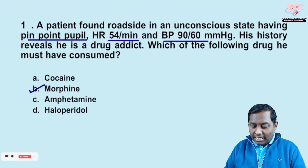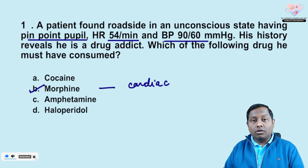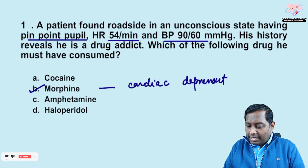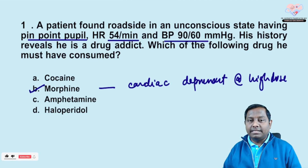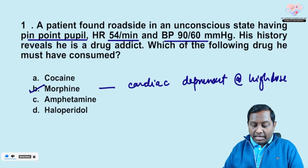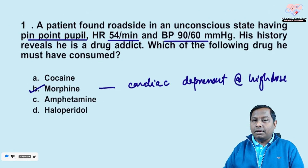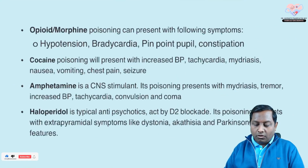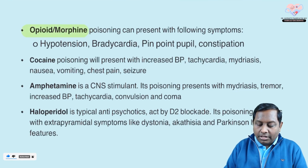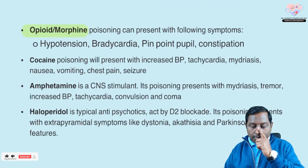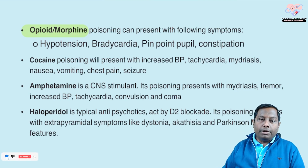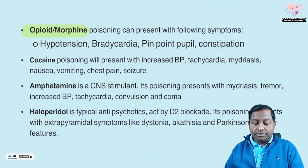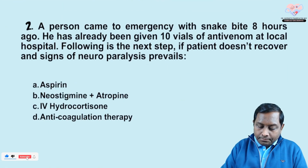The correct answer is morphine, which is an opioid. At high doses, it has cardiac depression properties — not at therapeutic doses, but at high doses. In a drug addict, high-dose intake is very common. Cocaine is a sympathomimetic, so there will be a lot of sympathetic activity; amphetamine likewise. Haloperidol is a typical antipsychotic associated with extrapyramidal symptoms, not pinpoint pupils. So opioid/morphine poisoning presents with the symptoms described here.